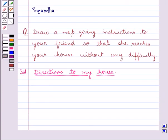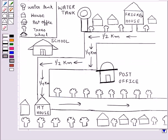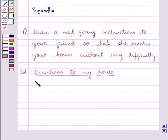Now we shall write the directions to my house from the friend's house. According to the map, as you can see, my friend will start from her house. She will walk half a kilometer to reach the water tank. So our first step would be: walk half a kilometer to reach the water tank.